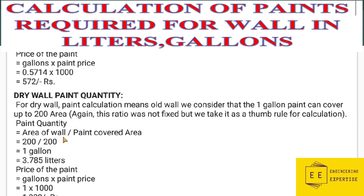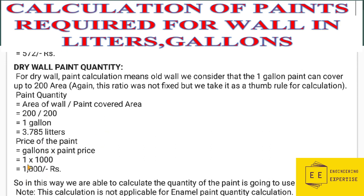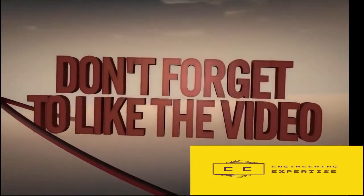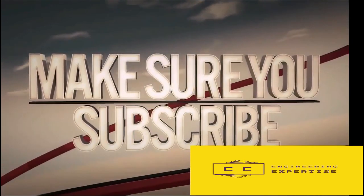Paint quantity equals area of wall divided by paint covered area: 200 divided by 200 equals 1 gallon. One gallon equals 3.785 liters. The price of the paint will be 1 gallon multiplied by 1000 rupees, which equals 1000 rupees. In this way we are able to calculate the quantity of paint to be used on a wall. Note that this calculation is not applicable for minimal paint quantity. Thanks for watching, please stay tuned for the next lecture.